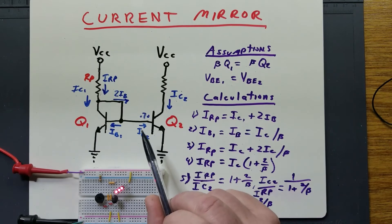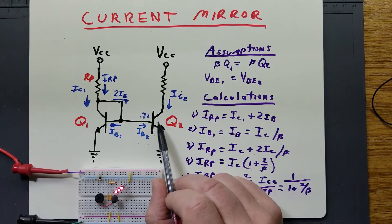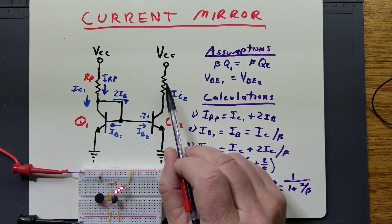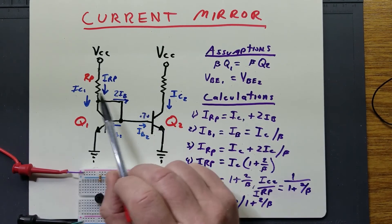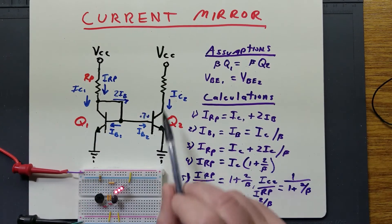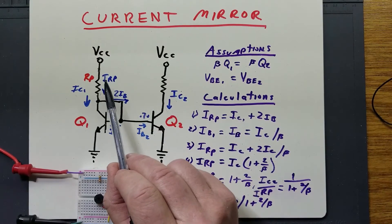If you decrease the load resistance, there will be more current flowing through here. This transistor will exhibit a larger voltage drop, thereby reducing the voltage drop across this resistor, causing less current to flow until it matches the amount of current dictated by IRP. IC2 is going to be very close to IRP — it's actually equal to IC1 — and IC2 will be really close to IRP if you have a very large beta. If beta is 100, for example, IC2 will be very close to IRP divided by 1, so for all practical purposes IC2 and IRP are pretty close.